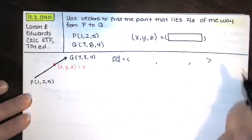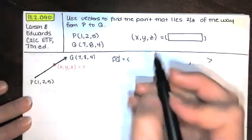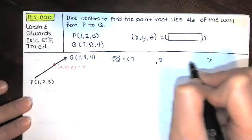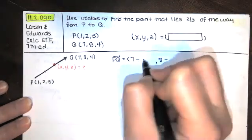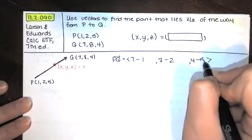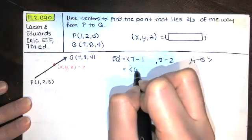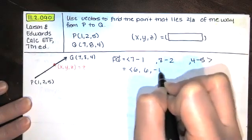Remember how we find component form for the vector PQ. We start with the coordinates of Q, and then we subtract the coordinates of P. And so we get a vector with components 6, 6, and negative 1.